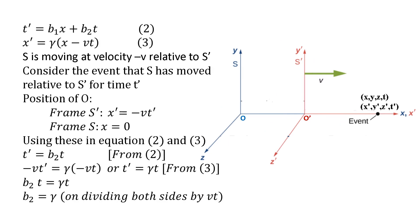S is moving at velocity minus V relative to frame S prime. Consider the event when S has moved relative to S prime for time t prime. The position of point O is X prime equals minus V·t prime in frame S prime and X equals 0 in frame S. Substituting these values of X prime and X into equations 2 and 3, from equation 2 we get T prime equals B2·t, and from equation 3 we get T prime equals gamma·t. Therefore B2·t equals gamma·t, giving us B2 equals gamma.